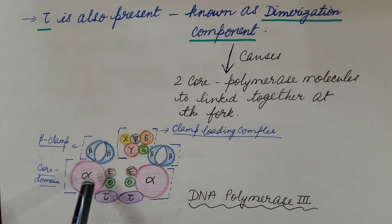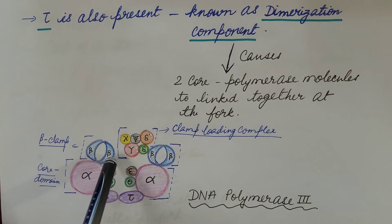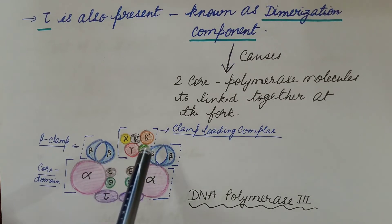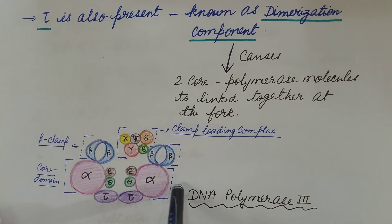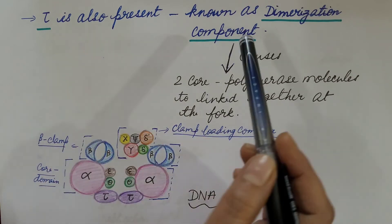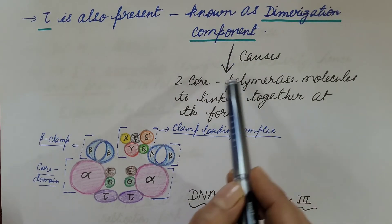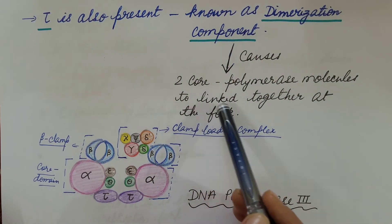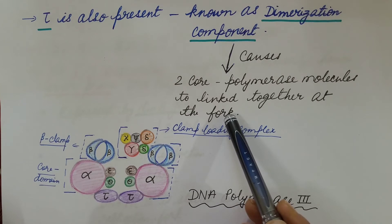In the diagram of DNA polymerase 3: the core domain consists of alpha, epsilon, and theta subunits; the beta clamp consists of the dimer of beta subunits; and the clamp loading complex consists of gamma, delta, delta dash, xi, and psi subunits. In addition, the tau subunit is present as a dimer — known as the dimerization component. It causes two core polymerase molecules to link together at the replication fork so that both leading and lagging strand synthesis takes place simultaneously.